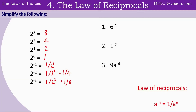So the law is written as a to the power of negative n is equal to 1 divided by a to the power of n. Using this law, pause the video and complete these questions. Question 1, we have 1 divided by 6 to the power of 1, which is just 1 over 6. For question 2, we have 1 divided by 1 to the power of 2, which is equal to 1. And for question 3, there is no negative power — it's to the power of 9 — so we leave that alone, then divide by a to the power of 4.